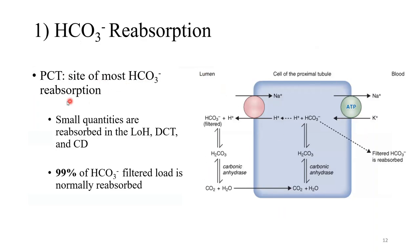PCT is the site of the most bicarbonate reabsorption, however it does get reabsorbed at the loop of Henle, DCT and CD. 99% of filtered bicarbonate is normally reabsorbed. Now what happens? What's going on?